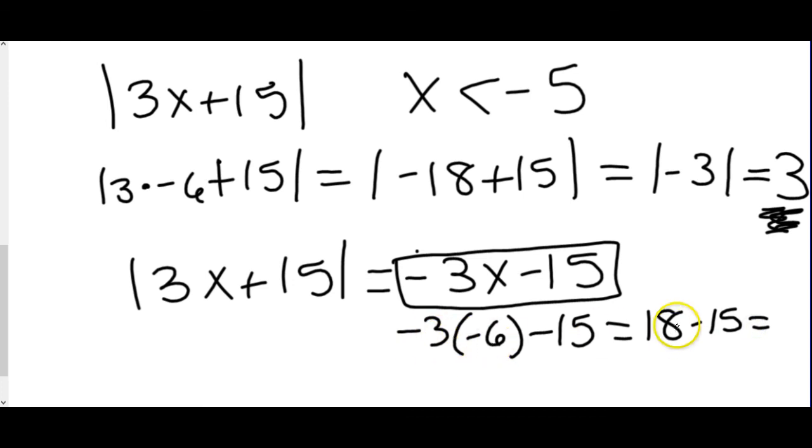Negative 3 times negative 6 is positive 18. Positive 18 minus 15 is positive 3. So we still got to the positive 3, but this time without the absolute value bars. And that's the whole purpose of simplifying an absolute value expression, is to get rid of the absolute value bars.